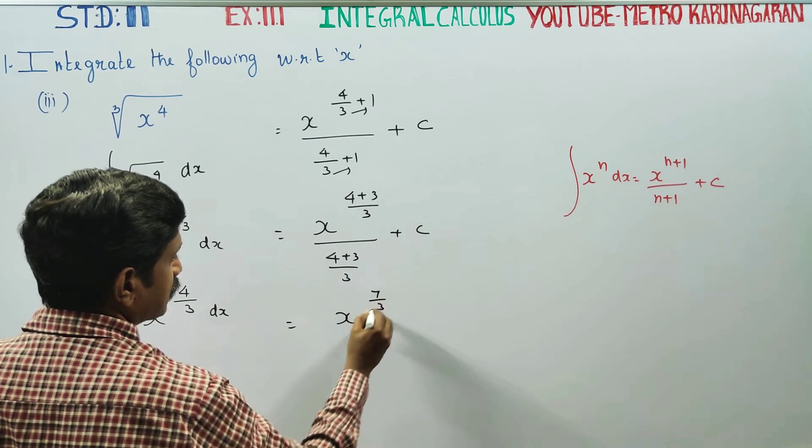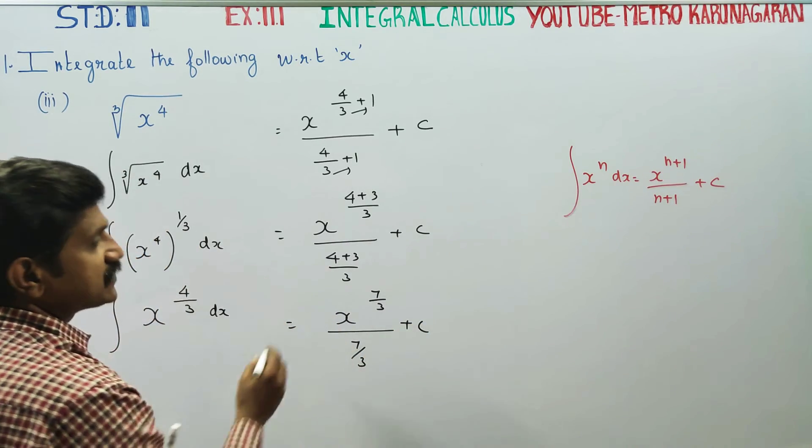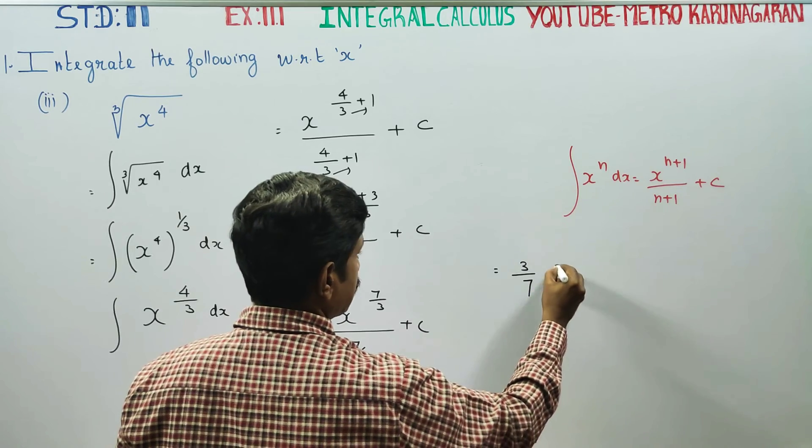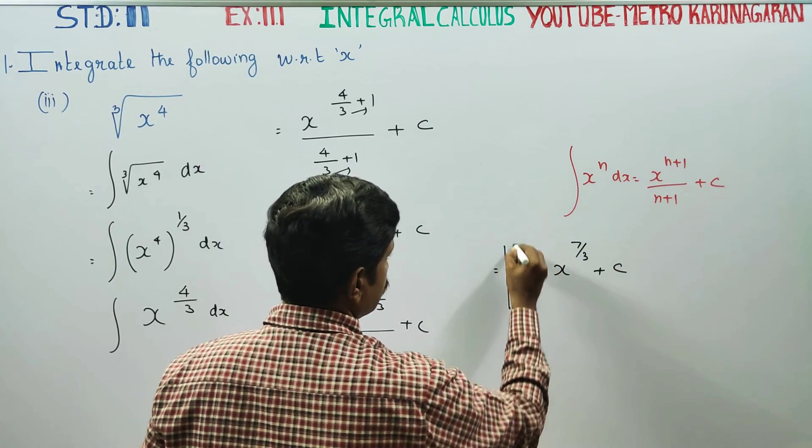x power 7 by 3 by 7 by 3 plus c. The reciprocal of that you put it in now. Your answer will be 3 by 7 x power 7 by 3 plus c will be your final answer.